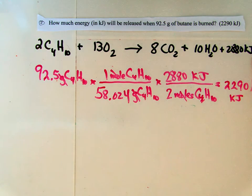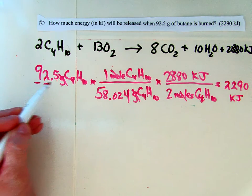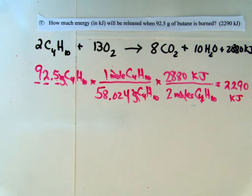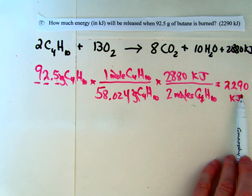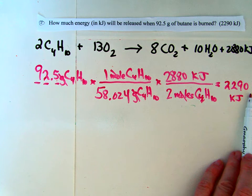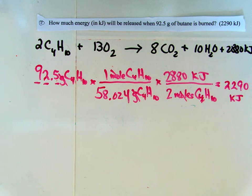And I want to point something out here about our final answer. We put three sig figs into our problem, so we need to get three sig figs out. So we round it to 2,290, and notice there is no decimal place after that zero because we don't want to make that zero significant.